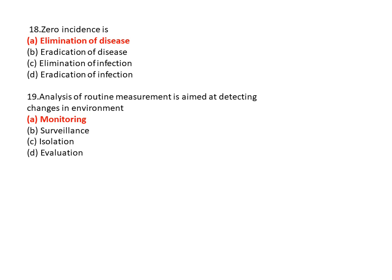Question 19: Analysis of routine measurement aimed at detecting changes in environment is? Option A is monitoring, option B is surveillance, option C is isolation, and option D is evaluation. So option A is the correct answer — monitoring.